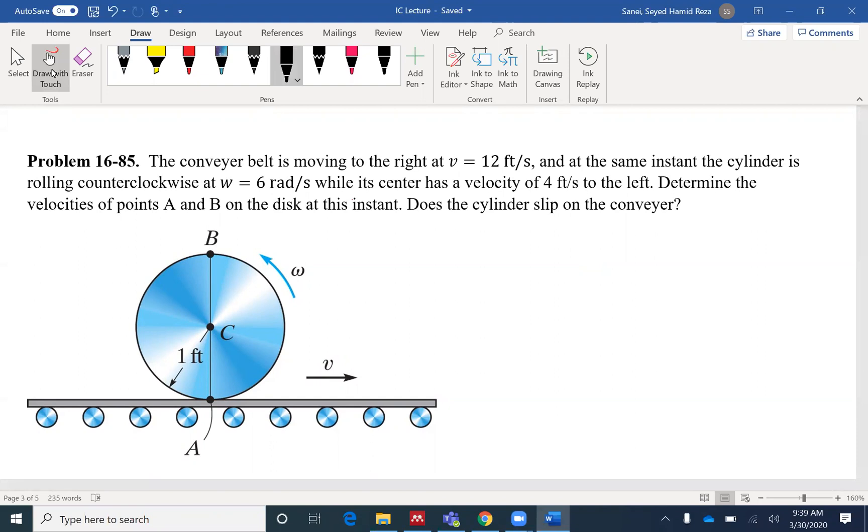So we have the velocity of the center to the left. Determine the velocity of point A and B on the disk at this instant. So if the omega is in that direction, velocity of B would be in that direction, velocity of A would be in this direction.